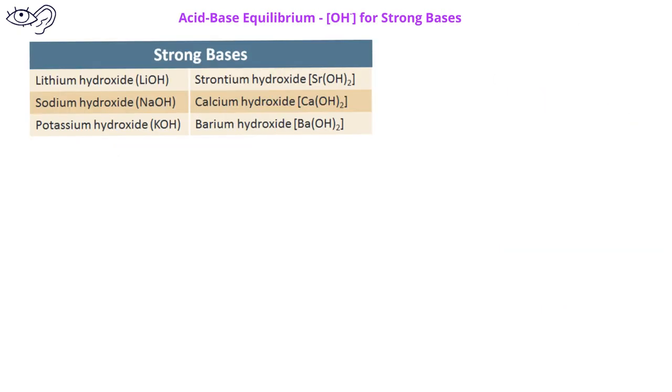There are six strong bases that you should be familiar with. Lithium hydroxide, sodium hydroxide, potassium hydroxide are all alkali metal hydroxides or group one metal hydroxides. You should also know the strong bases strontium hydroxide, calcium hydroxide, and barium hydroxide.